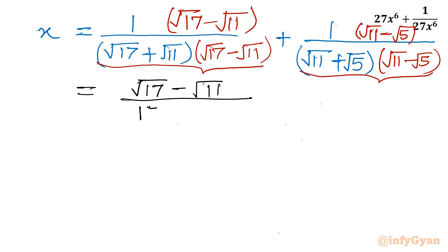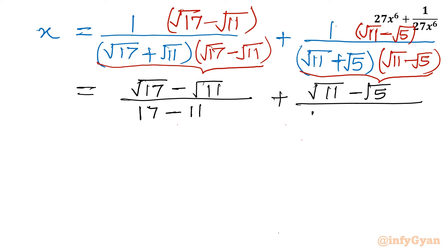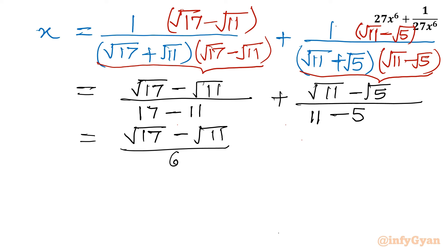So root 17 squared is 17, root 11 squared is 11. Plus (root 11 minus root 5) divided by 11 minus 5. So here I can write (root 17 minus root 11) divided by 6, and (root 11 minus root 5) divided by 6.